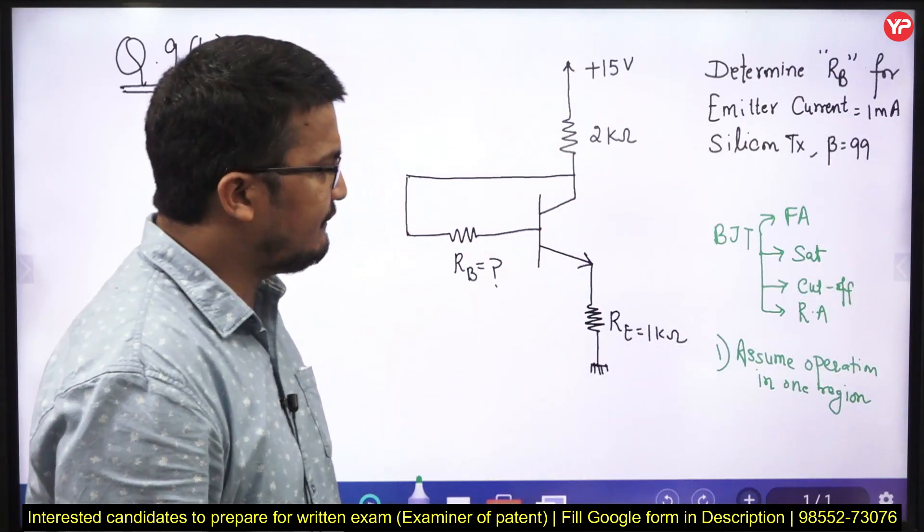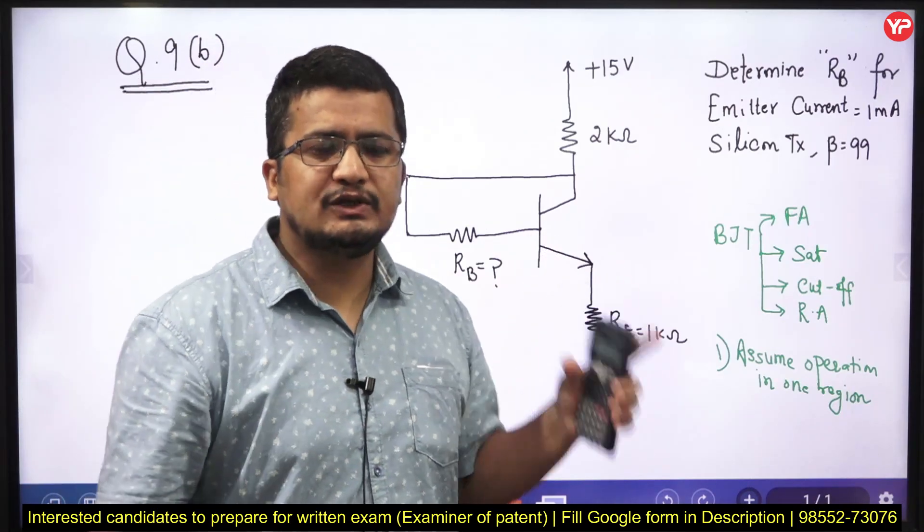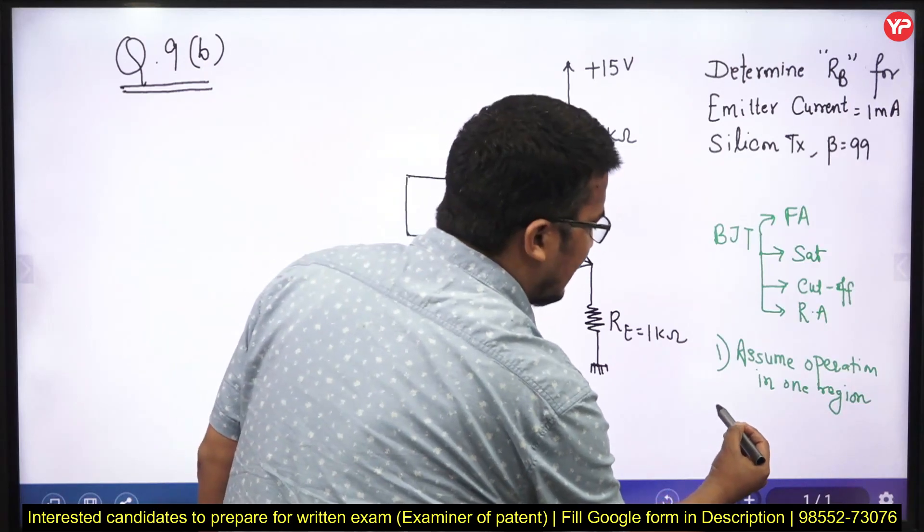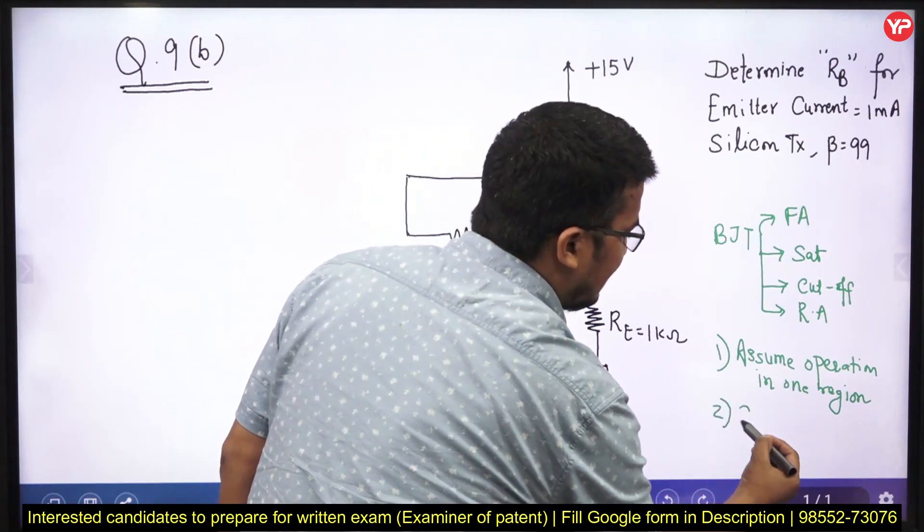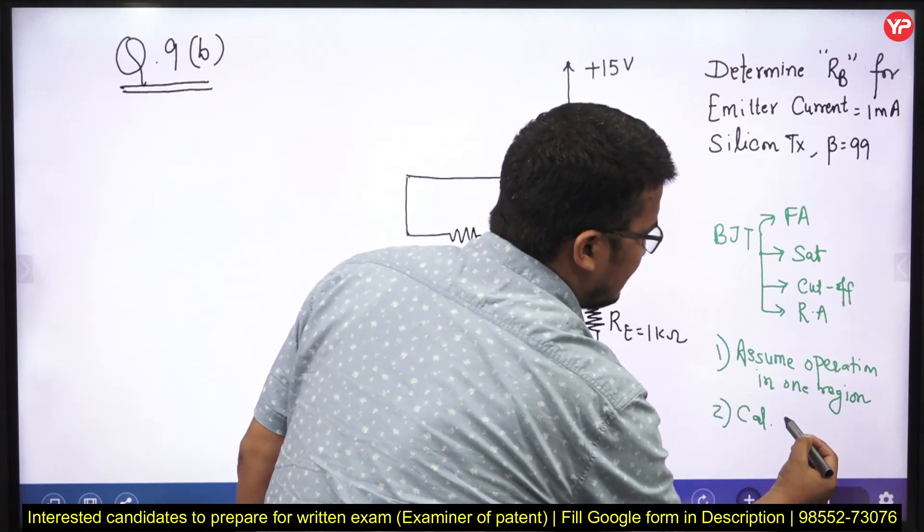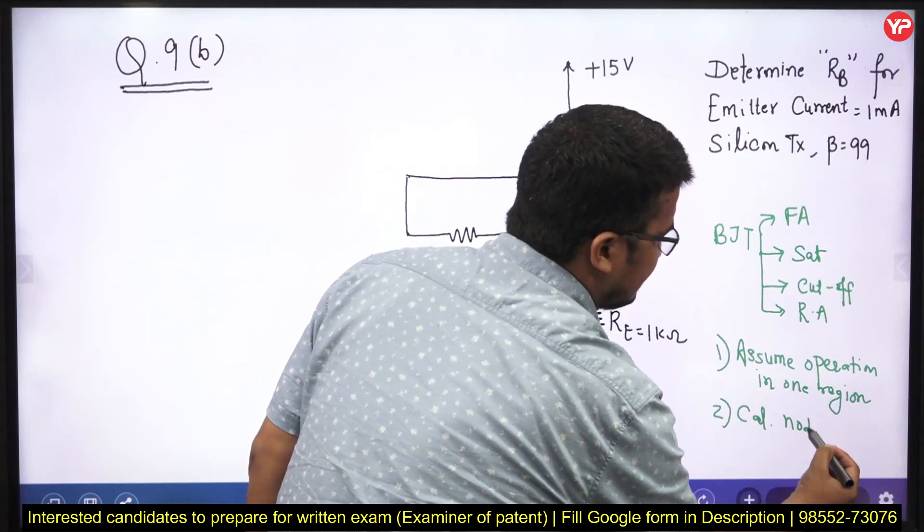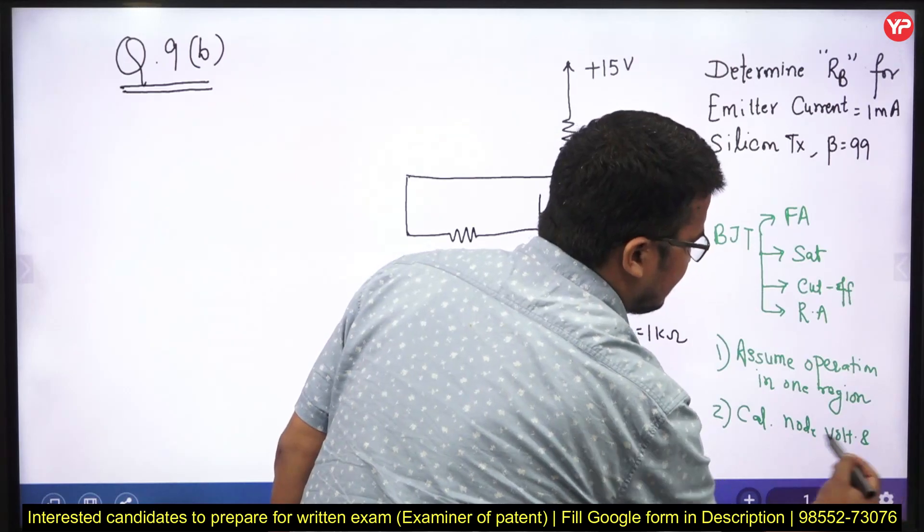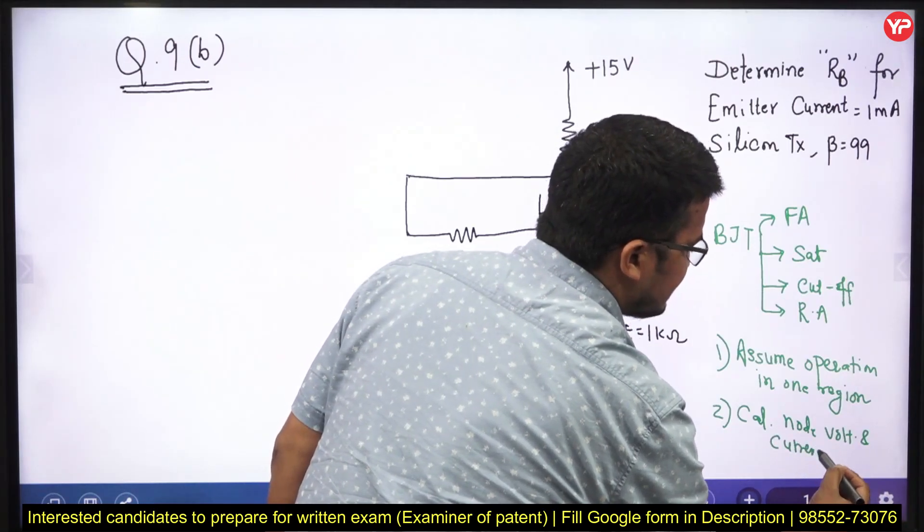And it will be better if you assume in the region where the calculations are quite easier. I always suggest students, if you have the BJT problem, assume itself in the active region and then under this assumption calculate the result. Under this assumption calculate the node voltages and current. Calculate under this condition node voltages and current.